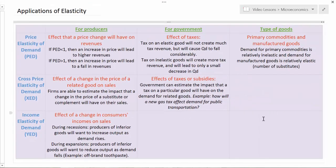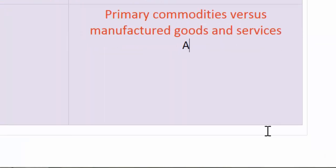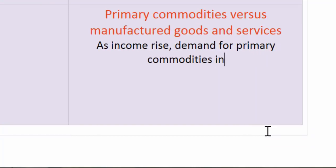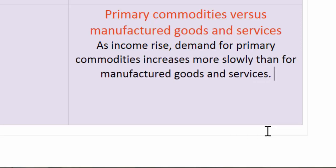Let's move over to the type of goods column and talk about how the income elasticity of demand for primary commodities might differ from that for manufactured goods and services. Generally speaking, as incomes rise, demand for primary commodities increases more slowly than for manufactured goods and services. As a country gets richer, households tend to increase their consumption of luxury goods and manufactured goods and services more rapidly than they increase demand for primary commodities. Service providers — such as salons, legal services, and medical services — tend to see their demand grow more rapidly as incomes rise.